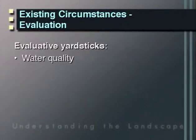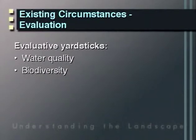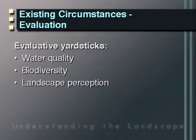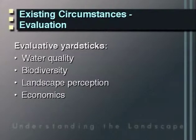There were four key natural and cultural processes used as evaluative yardsticks in the Iowa case study: effects of the different alternatives on water quality; effects on terrestrial biodiversity — the creatures that make their living on the land; the perceptual preferences of farmers in the study area for the different appearances of the three scenarios; and the dollar value of agricultural commodity production under the three future scenarios.